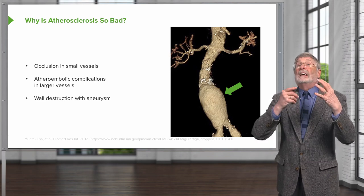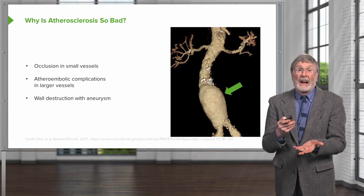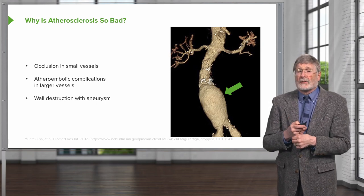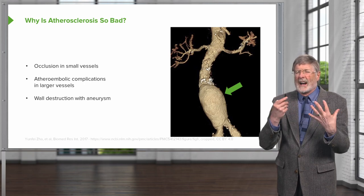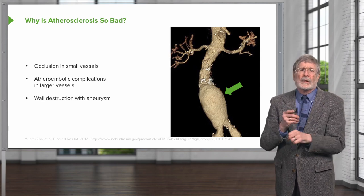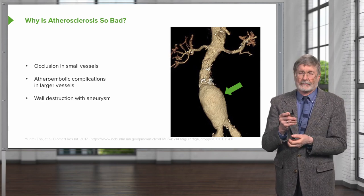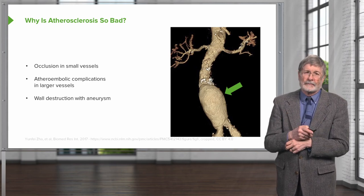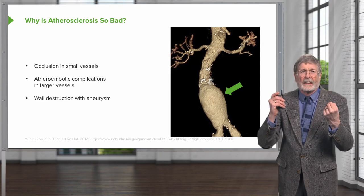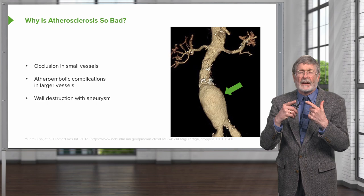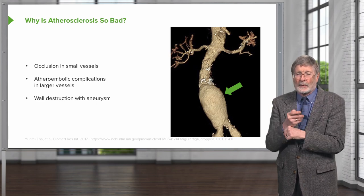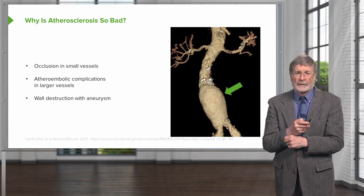So here's why atherosclerosis is so bad: small vessels, we block them; large vessels, we get friable atherosclerotic plaque and vessel wall destruction and aneurysm. With that, we've had our overview, and I look forward to seeing you again when we talk about all the details related to the development of atherosclerosis.